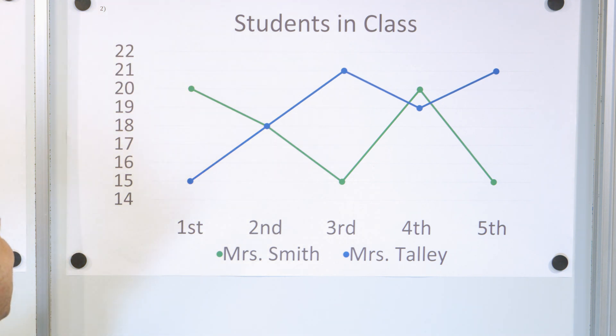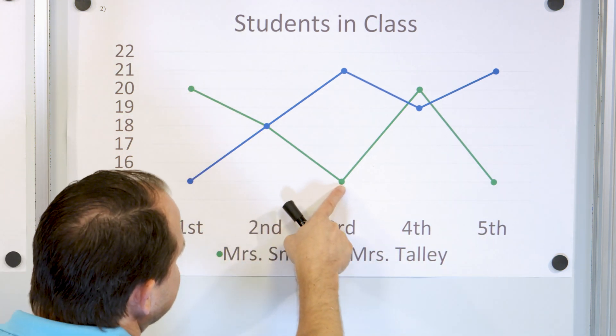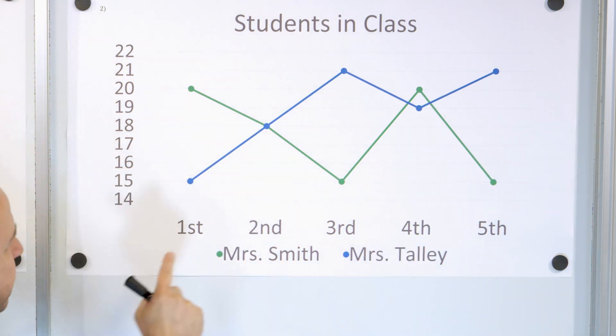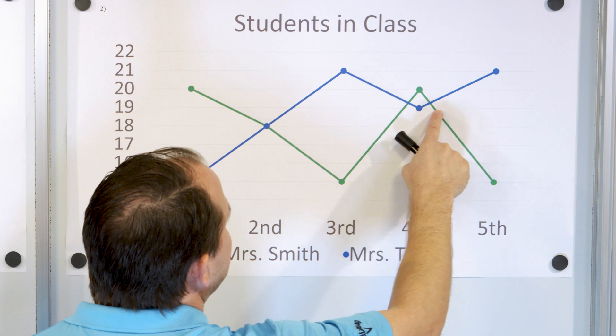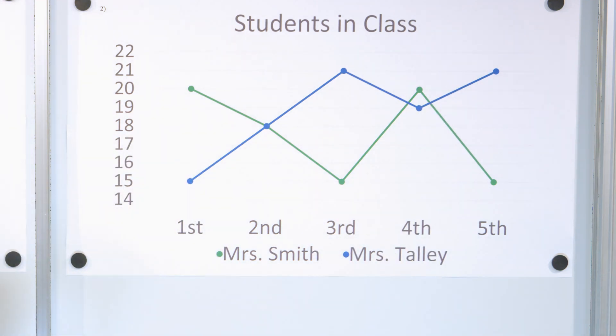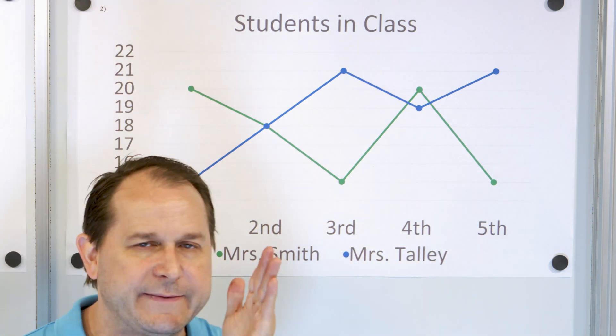We have the number of students in class over different periods of the day for two different teachers. So the green line goes down and up and down. That's Mrs. Smith. And then the blue line is Mrs. Talley, goes up and then down and then up like this. And the way you read this thing is you say, well, each of these teachers have first period, second period, third period, fourth period, and fifth period. Same thing.